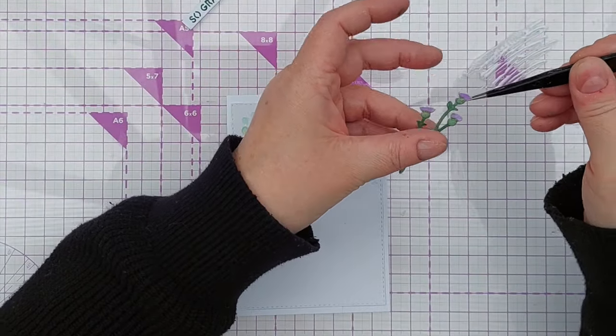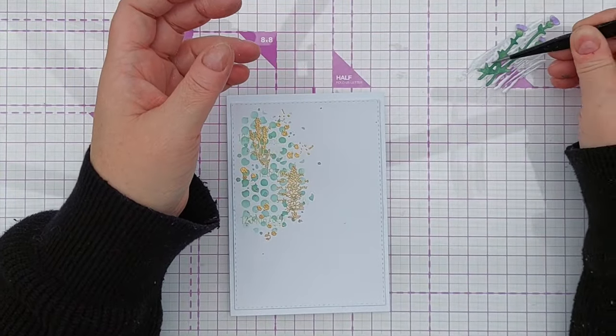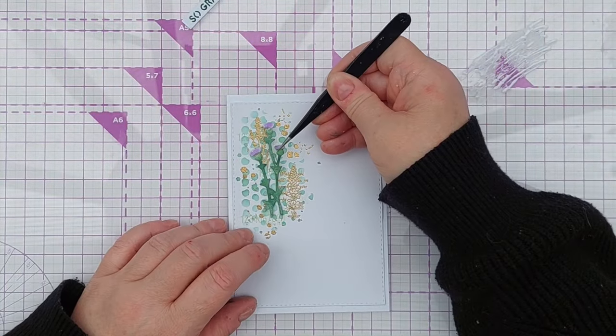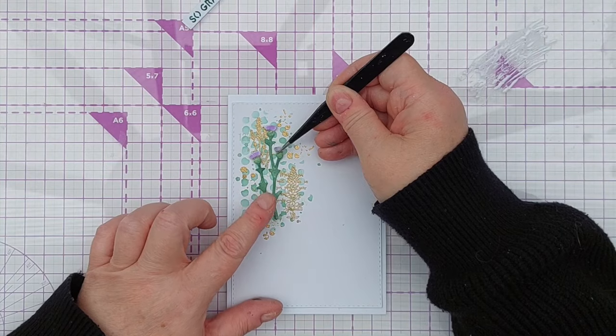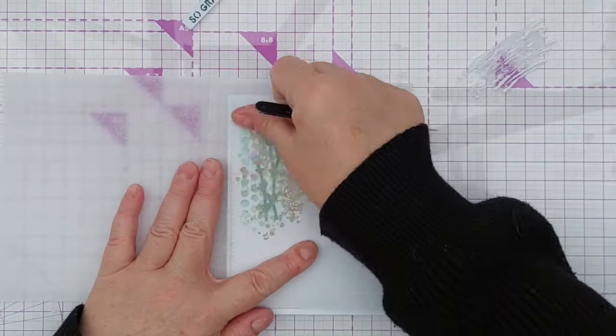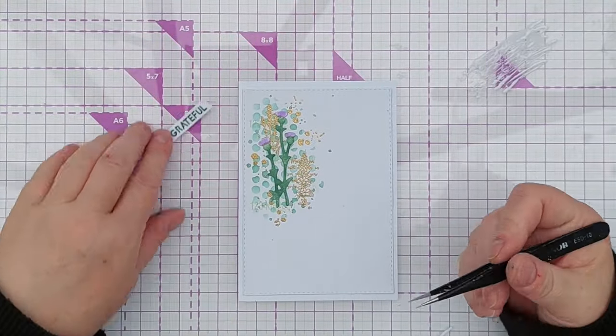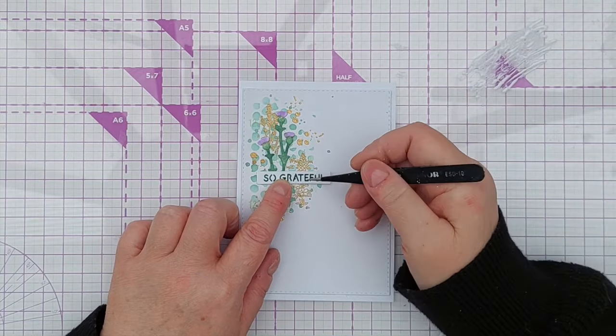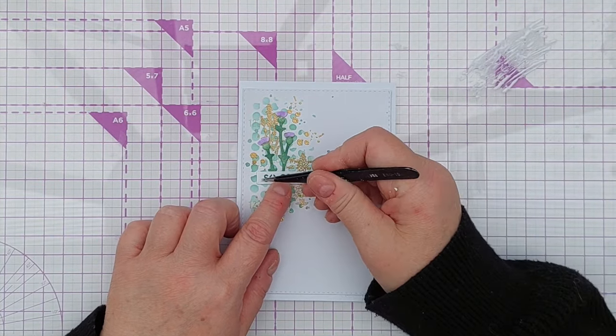and now I'm going to dip my thistle in the glue, pop that on there sort of central over my background and then I'm going to put the So Grateful here but I do want to put a little bit of card at either end to keep it level